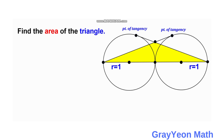Our approach is that since this is a triangle, the area is simply equal to one half times the base times the height. The base is the total diameter of both circles, which is obviously four units, and we are only concerned about finding the height. If we have the height, it will be easy to find the area, so let us focus on finding that first.